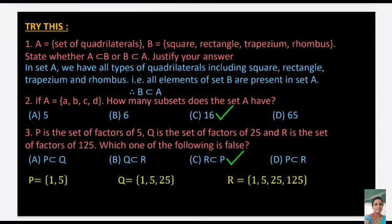If A = {a, b, c, d}, how many subsets does A have? We use the formula 2ⁿ where n is the number of elements. A has 4 elements, so the number of subsets = 2⁴ = 16.